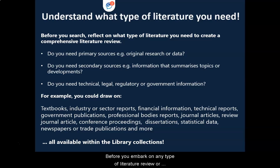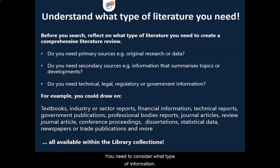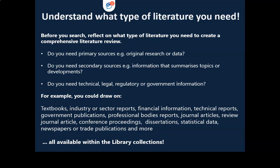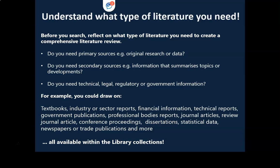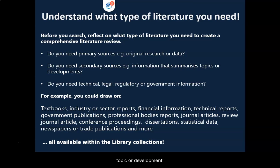Before you embark on any type of literature review or information gathering activity, you need to consider what type of information you need to support your research. For example, do you need primary research — original research or data undertaken by and reported by the author or authors? Or do you need secondary resources — information that summarises existing research on your topic or developments?